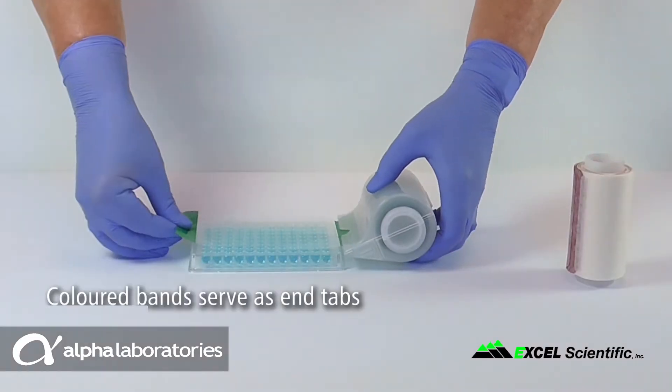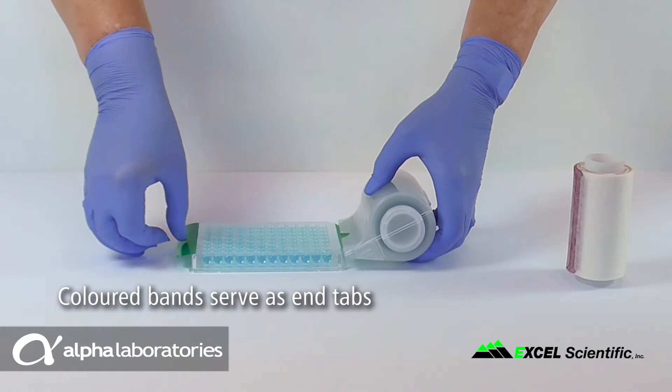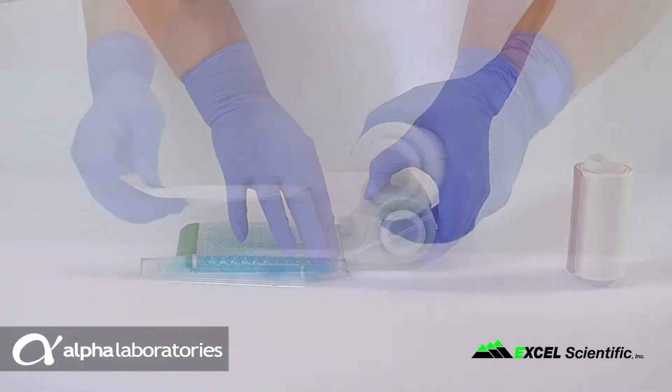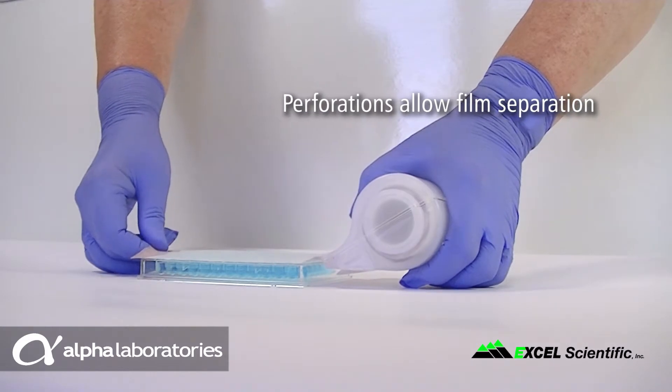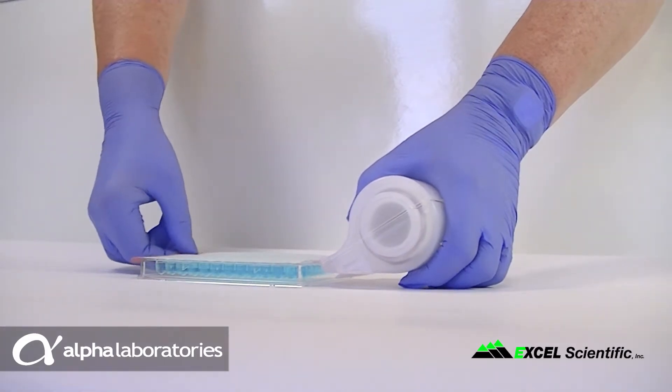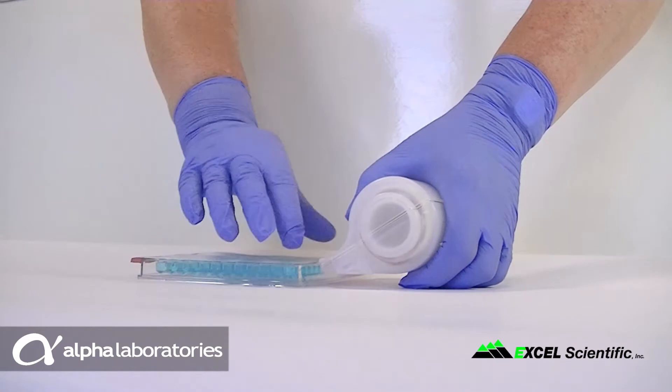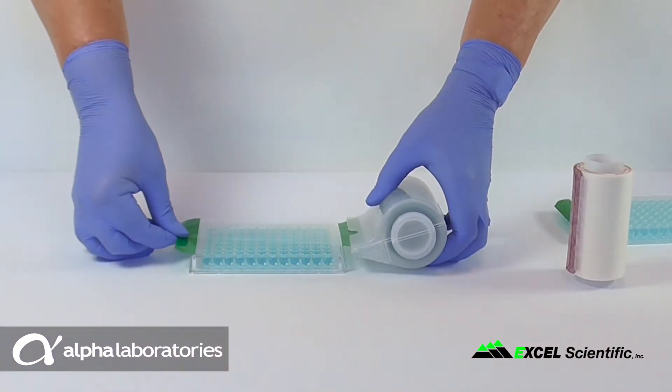The colored bands serve as end tabs for positioning the films on the microplates. They have perforations that allow the films to be separated when applied. They also provide an easy visual marker between each sheet so that the next film is not pulled out from the dispenser prematurely.